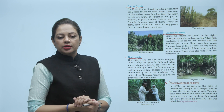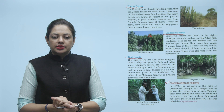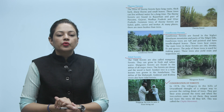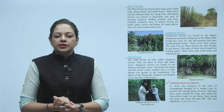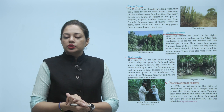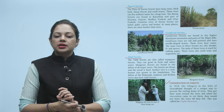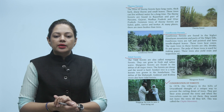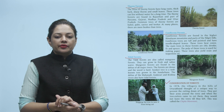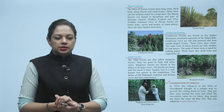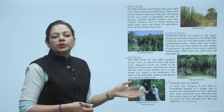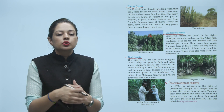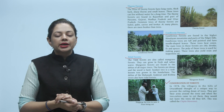Conservation of forests — how we can save our forests. In 1974, the villagers in the hills of Uttarakhand thought of a unique way to prevent the cutting down of trees. They put their arms around the trees, and when the tree cutters came, they would not leave the trees till they left. This was called the Chipko movement.